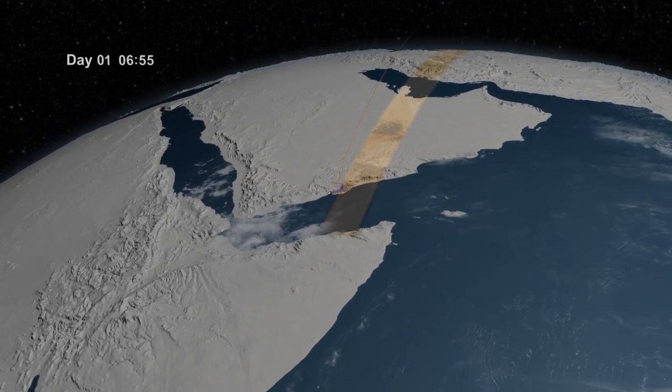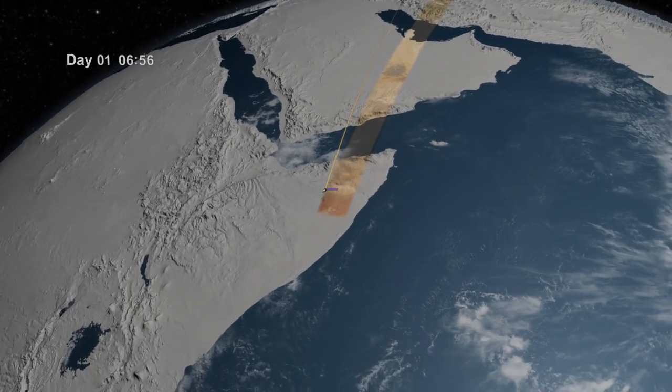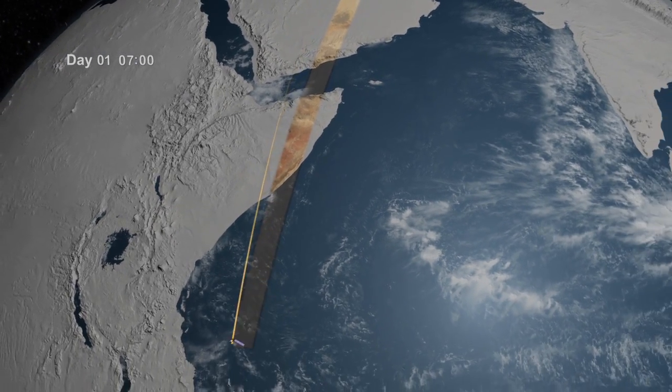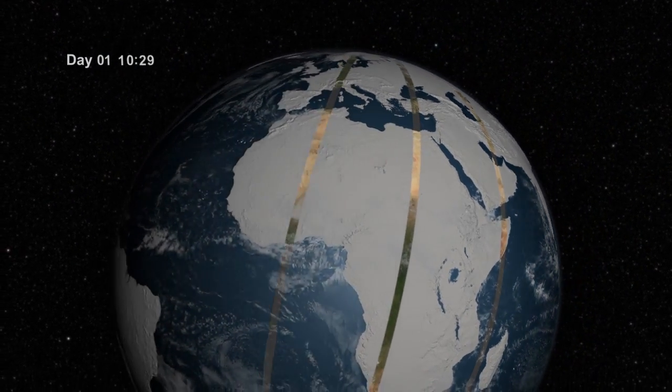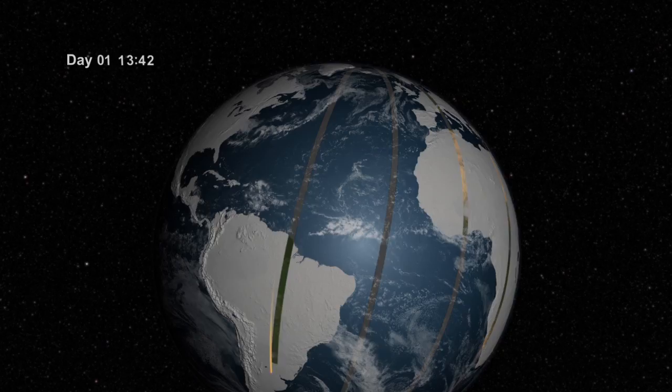The spacecraft travels at approximately 4.7 miles per second. The satellite travels from north to south while it's over the sunlit portion of the Earth and travels south to north over the dark side of the Earth.